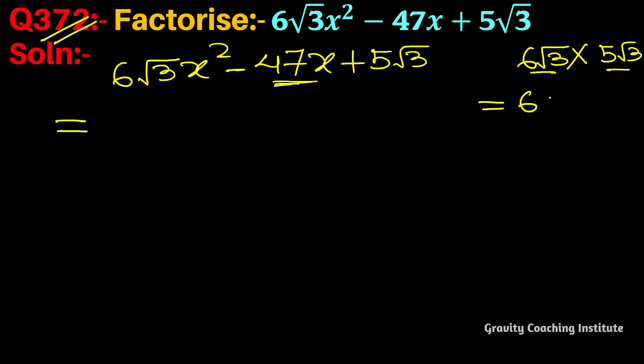We will multiply √3 times √3, which will be 3. We will multiply 2 × 3 × 5 × 3, and we will multiply this with 47.